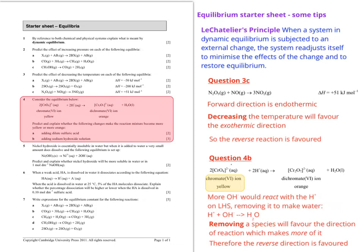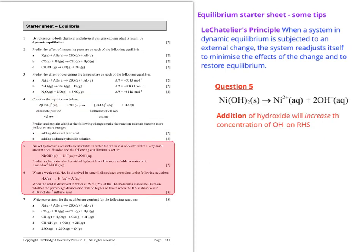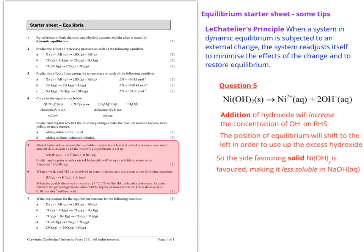Let's move on to number 5. If we add hydroxide its concentration will increase on the right hand side. Which direction is it going to go to try to oppose this according to Le Chatelier's principle? Why don't you pause the clip and see if you can work it out before I tell you. The position of equilibrium will therefore shift to the left in order to use up the excess hydroxide so the side favoring solid nickel hydroxide is favored, making it less soluble in NaOH.